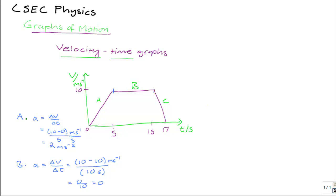For section C, acceleration equals delta V over delta T, which is 0 minus 10 — because change in velocity is calculated as final velocity minus initial velocity, so 0 meters per second minus 10 meters per second — divided by 2 seconds, which gives a value of minus 5 meters per second squared. The minus sign indicates that the object is decelerating — its velocity is decreasing.